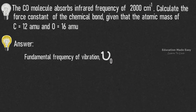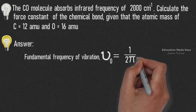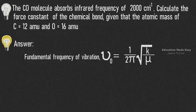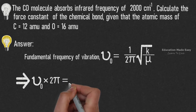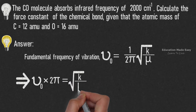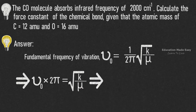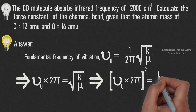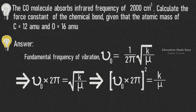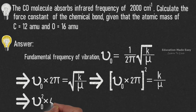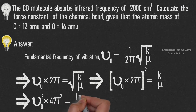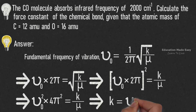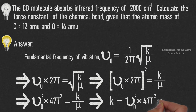The fundamental frequency of vibration of a molecule is given by the formula: μ₀ = (1 / 2π) × √(k / μ). This implies μ₀ × 2π = √(k / μ). Squaring both sides: (μ₀ × 2π)² = k / μ, so μ₀² × 4π² = k / μ, which means k = μ₀² × 4π² × μ.